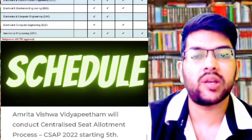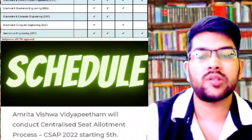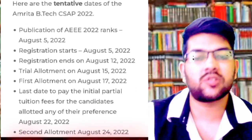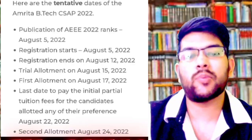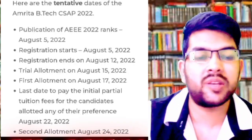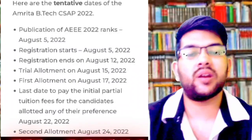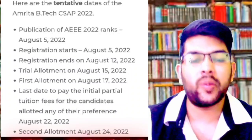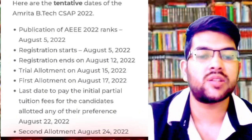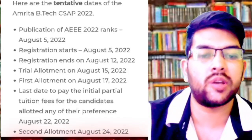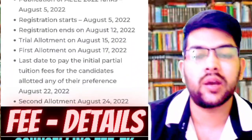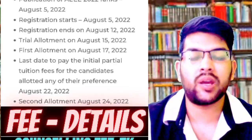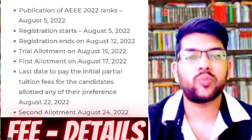Now let's talk about the schedule — very important to follow. These are tentative dates; they may change as they changed multiple times last year. Publication of AEEE result based on best percentile from Phase 1 and Phase 2 is on August 5th. Registration for CSAP starts from August 3rd and continues up to August 12th. Trial allotment — which is just a mock allotment — will be done on August 15th. First round allotment will be done on August 17th. Last day to pay the provisional fee for the seat you receive is August 22nd.